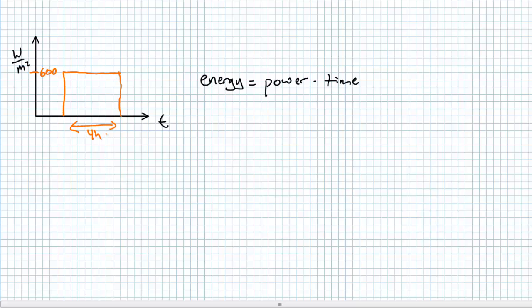The answer, again, is surprisingly simple. Energy is power times time. Every one meter squared patch of this planet will receive 600 watts times four hours, or 2,400 watt hours of energy over the course of this day, or 2.4 kilowatt hours.